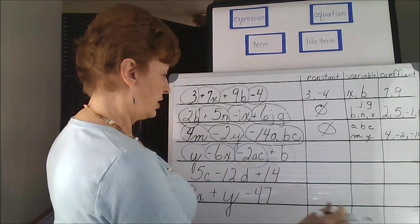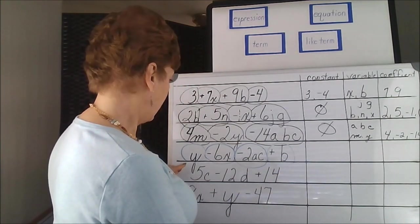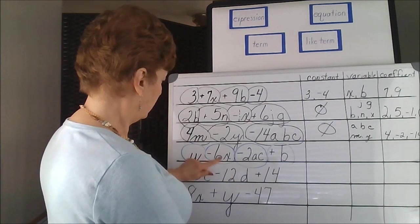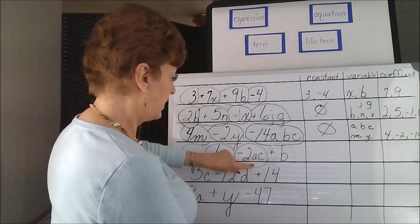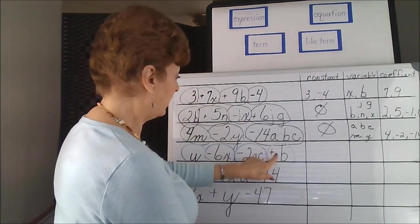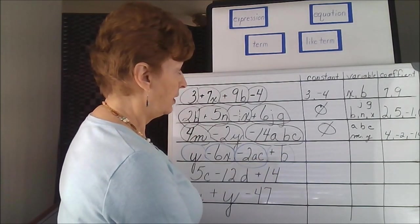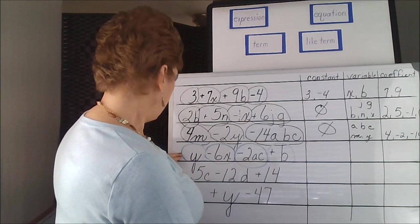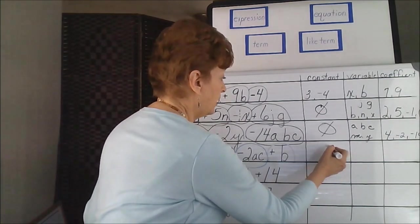Constants, just numbers that are out there by themselves in the term. Nope, that one's attached, that number's attached, there's an understood 1 on this. So we've got no constants.